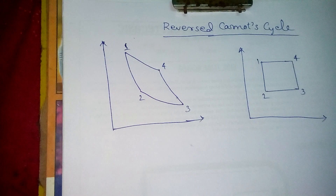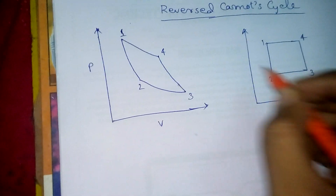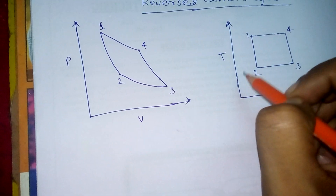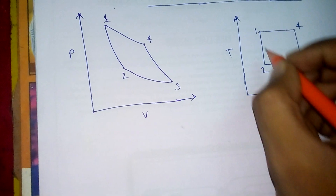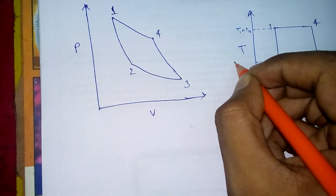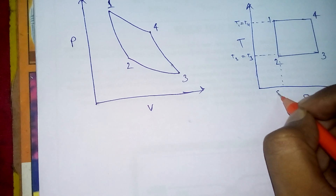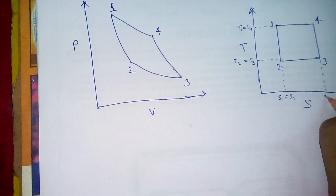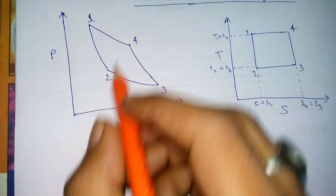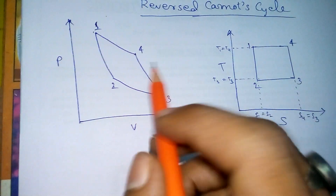We can see two diagrams: the PV diagram and the TS diagram. This is the PV diagram and this is the TS diagram. This is the pressure line, this is the volume line, this is the temperature line, and this is the entropy line. We have T1 equals T4, and T2 equals T3. The entropy values are S1 equals S2, and S4 equals S3. These are the four points: 1, 2, 3, and 4, going on cyclically.